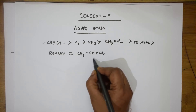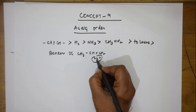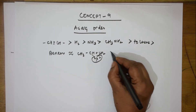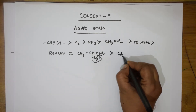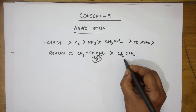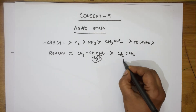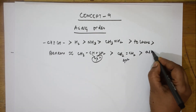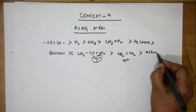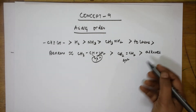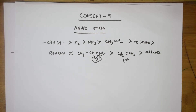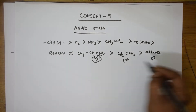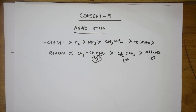Benzene and alkenes are sp2 hybridized carbons. Alkenes have more acidity than alkanes, which are sp3 hybridized. So the full order from most to least acidic is: alkynes (sp) > alkenes/benzene (sp2) > alkanes (sp3). This is the order — remember that.